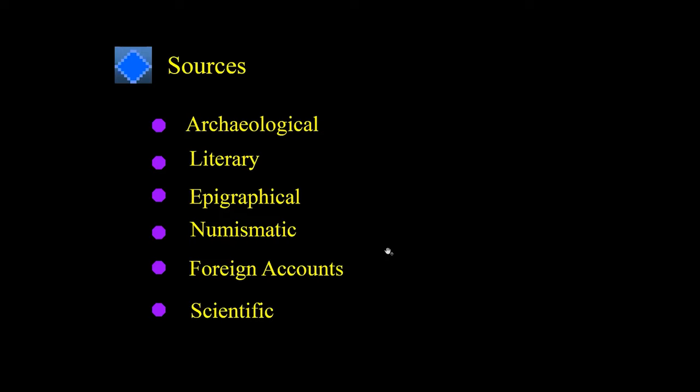With regard to literary data, the earliest available in South India is Sangam literature; in Andhra Pradesh, Satrasai is also available. For epigraphical data, there are two sets for the early historic period: one is the Brahmi inscription, found in two languages — Prakrit and Tamil. Across almost the entire Indian subcontinent except Tamil Nadu, the language is Prakrit and the inscription is Brahmi. In Sri Lanka, Prakrit inscriptions are also available. But in the southernmost part of the Indian peninsula, the Tamil language is used to write the Brahmi inscription.